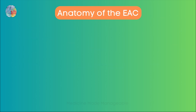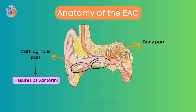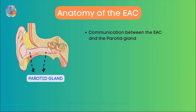From the exam perspective, there are two very important things to know: the fissures of Santorini and the foramen of Huschke. The fissures of Santorini are found in the cartilaginous part of the EAC, while the foramen of Huschke is found in the bony part. The parotid gland is located very near to this area, and both of these structures serve as communication between the EAC and the parotid gland. Through these communications, infection can spread from the EAC to the parotid gland or vice versa.